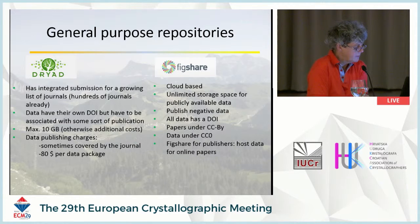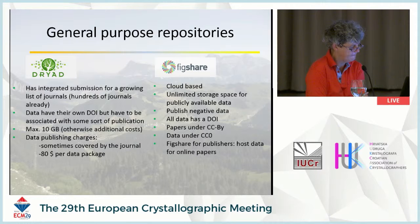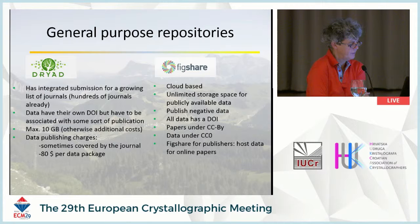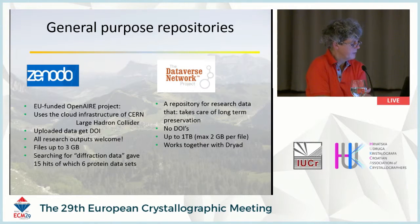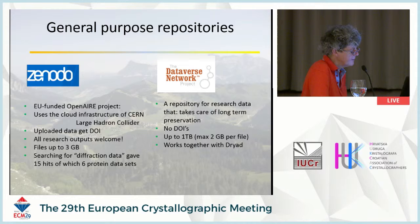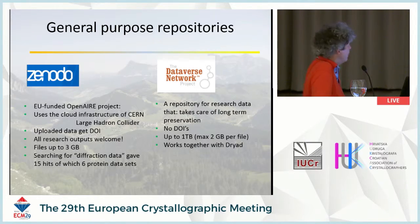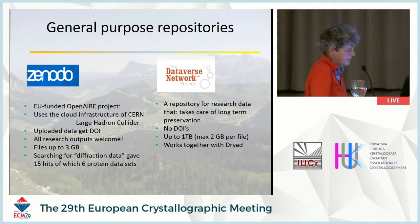There's also figshare, which is cloud-based, data also get a DOI, and it can be used by publishers to host data for online papers. Then there's Zenodo, an EU-funded open-access project using CERN's cloud infrastructure. Searching for diffraction data there yields about 15 hits, 6 of which are protein datasets, so it is being used.